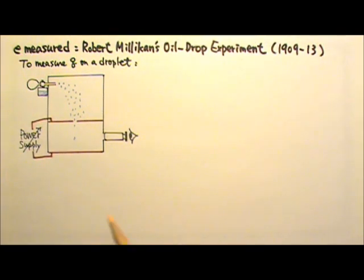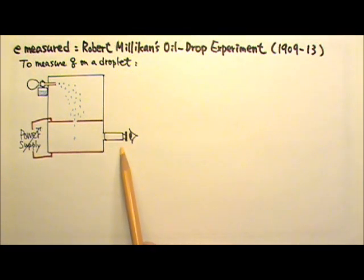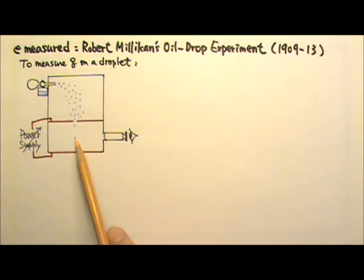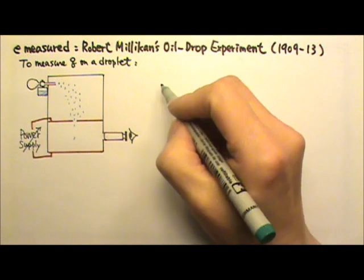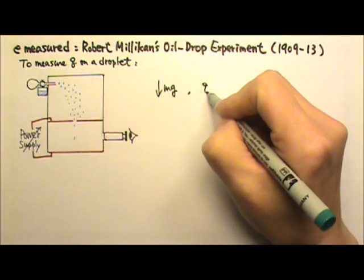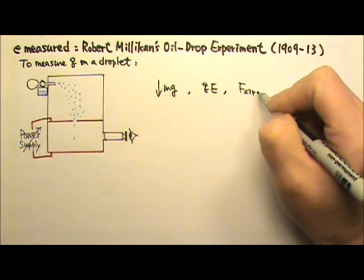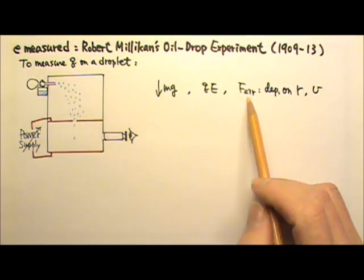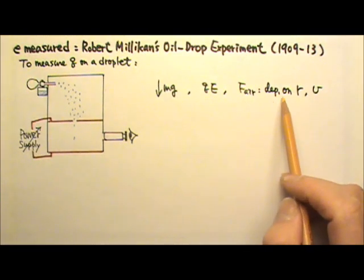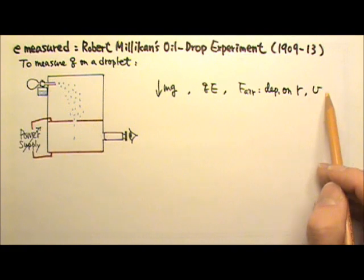The experimenter would pick one oil droplet to follow, manipulate and observe through a telescope. Inside, an oil droplet can experience three forces: the gravitational force Mg, the electric force Qe, and the air resistance. The air resistance is dependent on the size, the radius of the droplet, and the speed of the droplet.